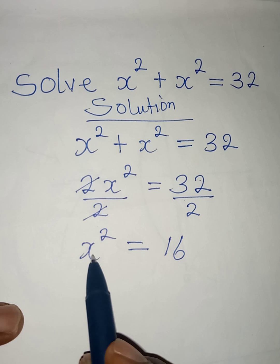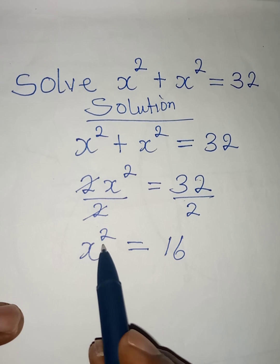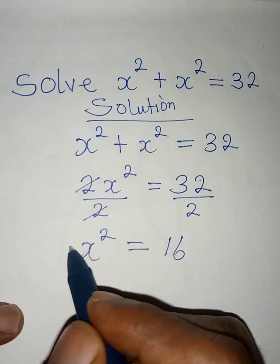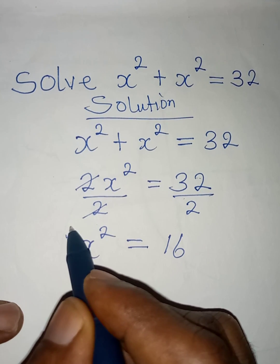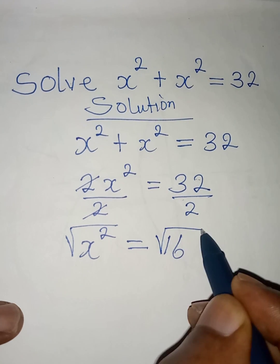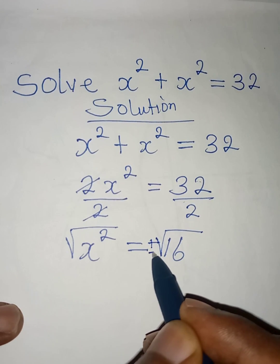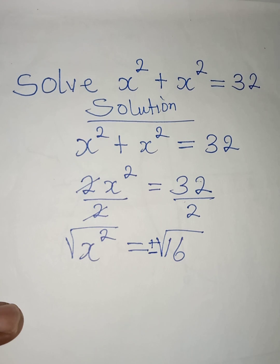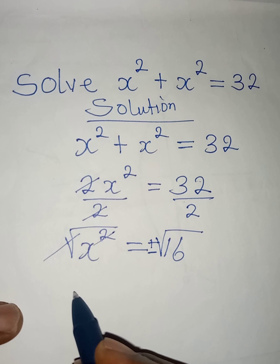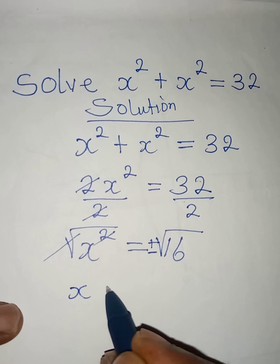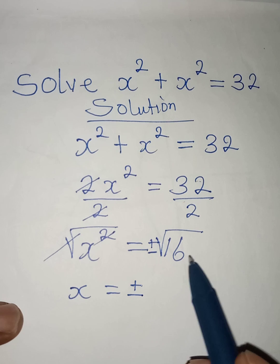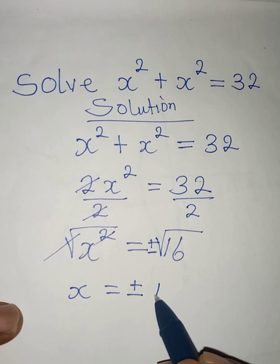Now the next thing is for us to eliminate the power 2, I mean the square. And the only way we can do that is to take the square root of both sides. And when you're taking square root of both sides, on the right hand side, you will have positive or negative answer. So here square root and the square will cancel each other and then x will be equal to positive or negative. Then square root of 16 will be 4.